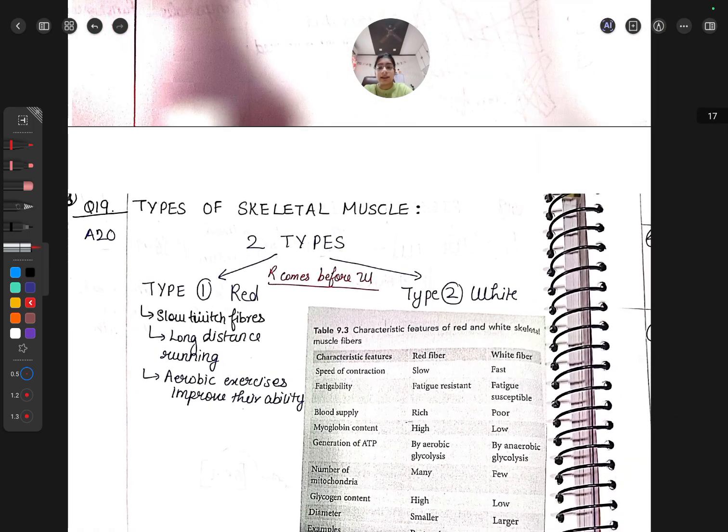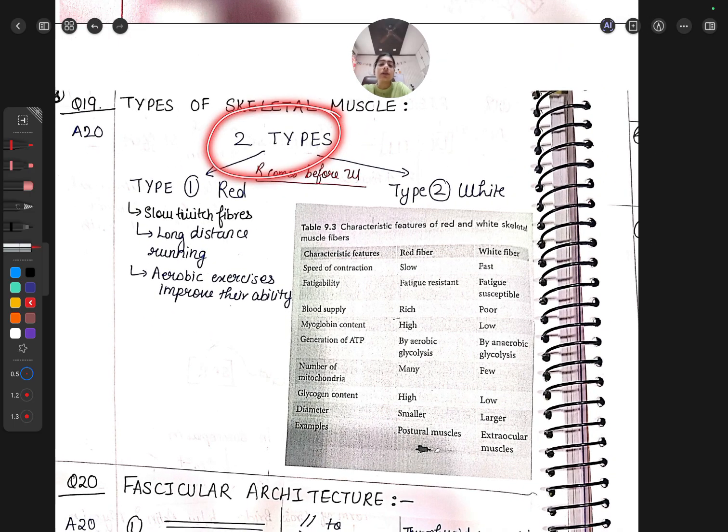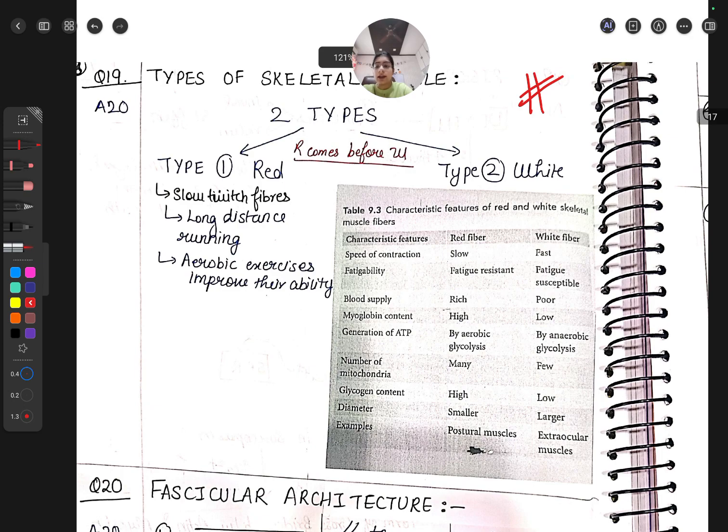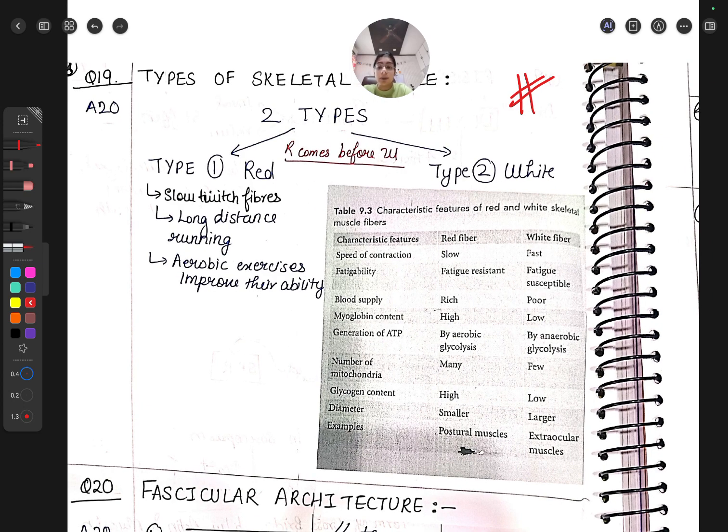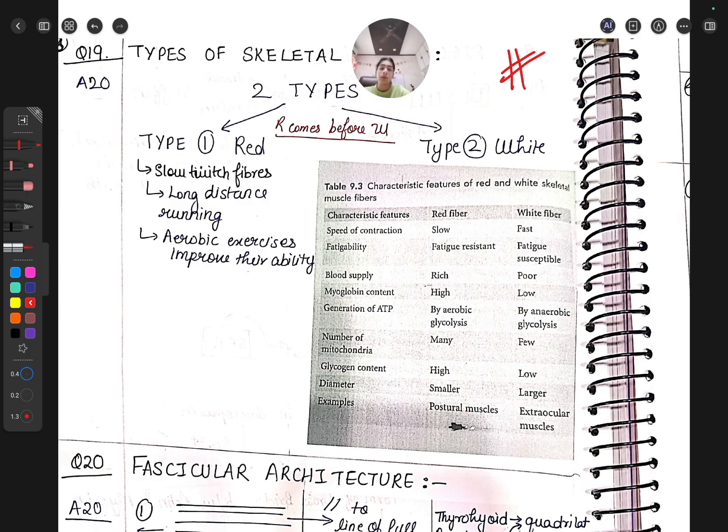Types of skeletal muscle - covered in physiology but needed here as well. Can come as a differentiate question. Type 1 red and Type 2 white. These are slow twitch fibers for long distance running and aerobic exercises. Learn this by analogy: red fibers are slow and white fibers are fast regarding speed of contraction. Red fibers have slow contraction, not used for sprinters. White is used for sprinters.